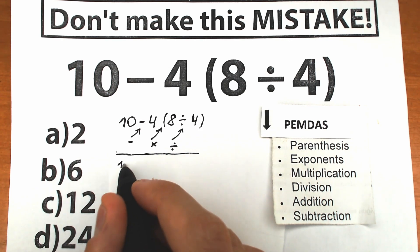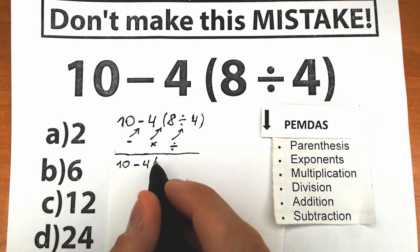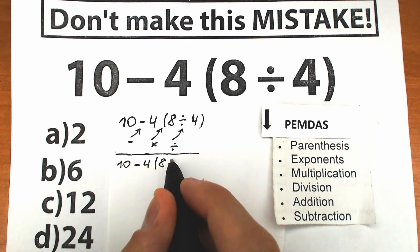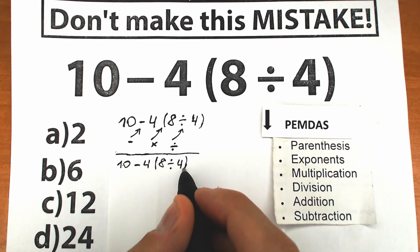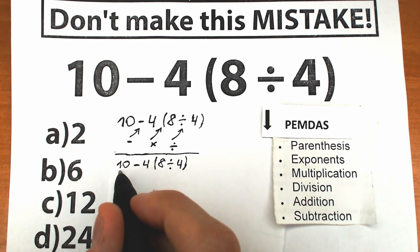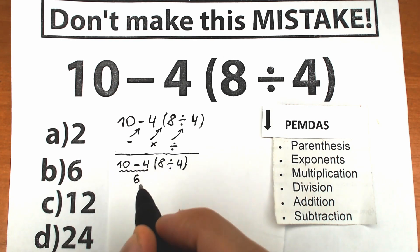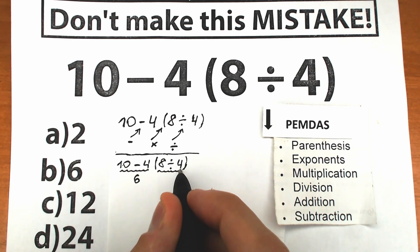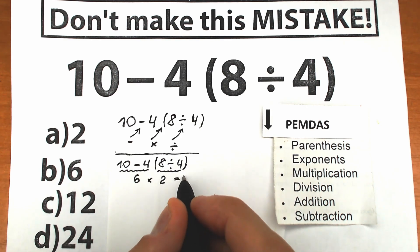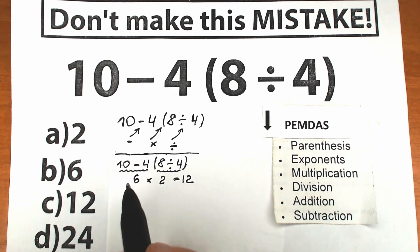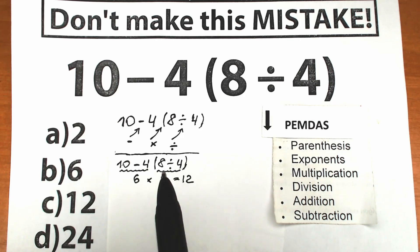Obviously, if we have 10 minus 4 and 8 divided by 4, a lot of students say, okay, maybe from left to right: 10 minus 4, we have 6. And right here, 8 divided by 4, we have 2. So 6 times 2 equals 12. And this is one of these solutions — a lot of students solve this challenge like that.